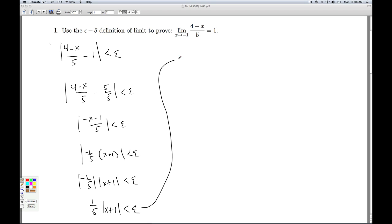So if I look at this, I've got the x plus 1 sitting there less than 5 epsilon. Now all of these steps are reversible. So that means that if I want this to happen, all I need is for this to happen. That's how we do the formal proof.